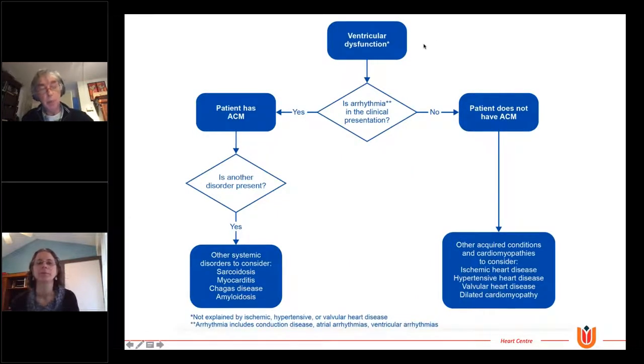So when do you speak of arrhythmogenic cardiomyopathy? There needs to be some kind of ventricular dysfunction, and in those patients where the arrhythmia is the clinical presentation, you can diagnose the patient with arrhythmogenic cardiomyopathy. Within the group of arrhythmogenic cardiomyopathy are also some systemic disorders, like sarcoidosis, myocarditis, Chagas, or amyloidosis, and they are not considered in the subgroup of arrhythmogenic cardiomyopathy.